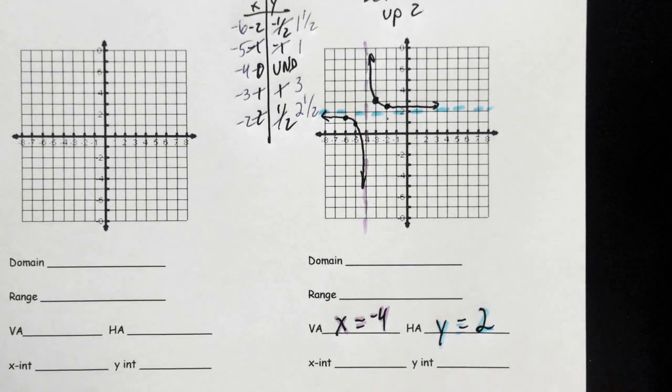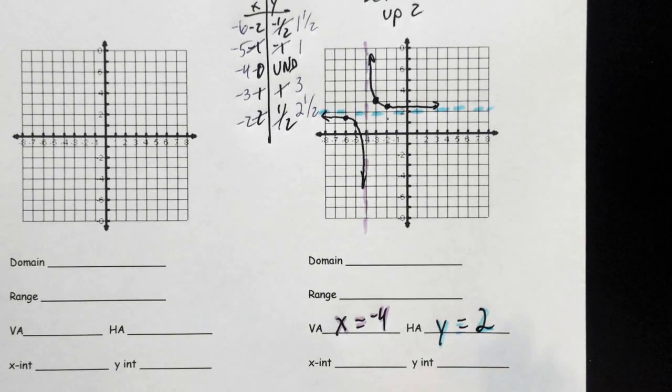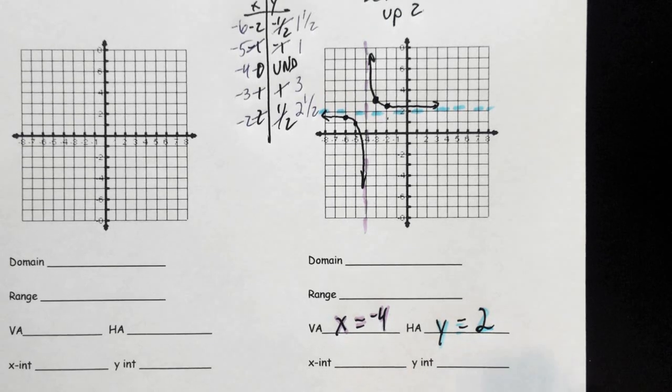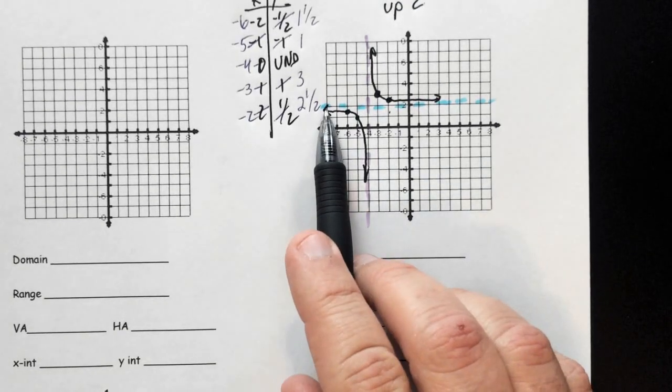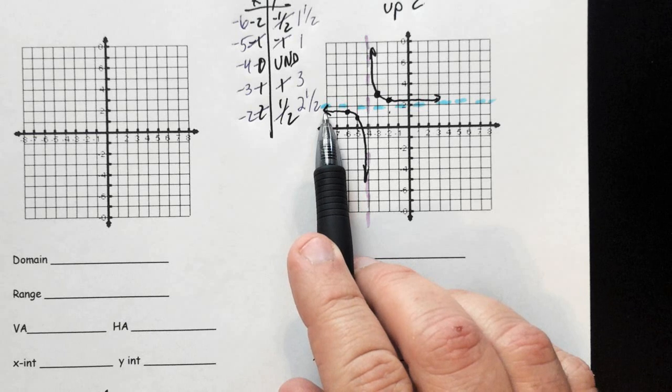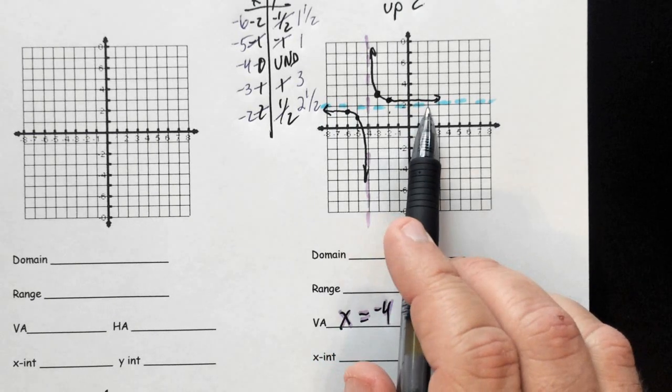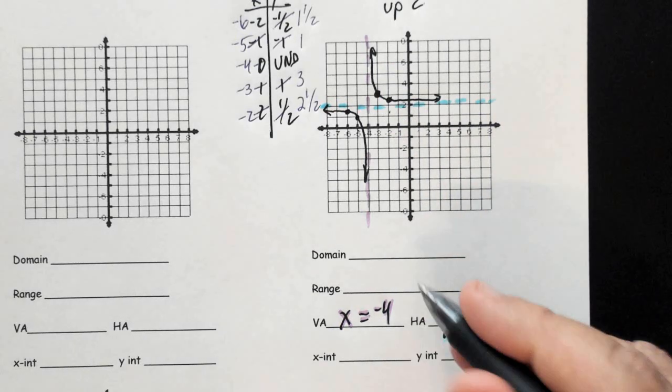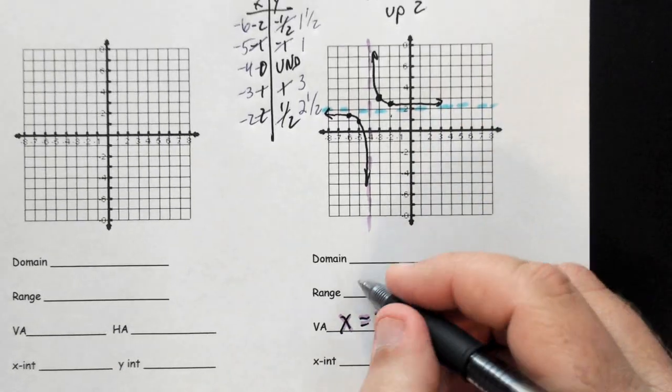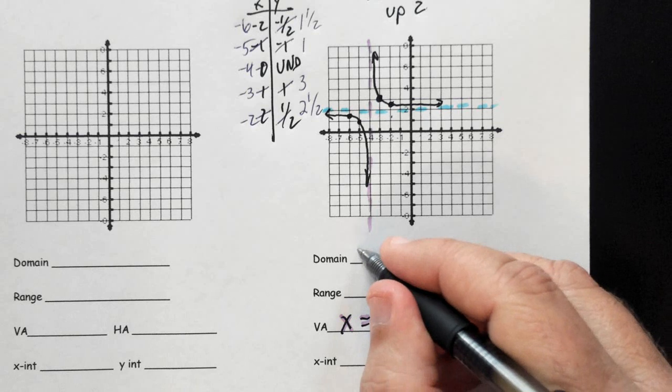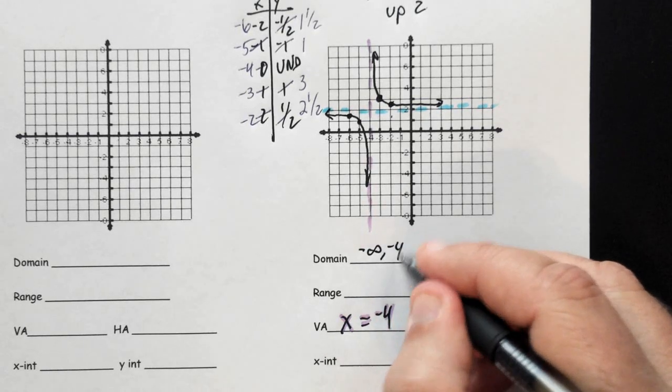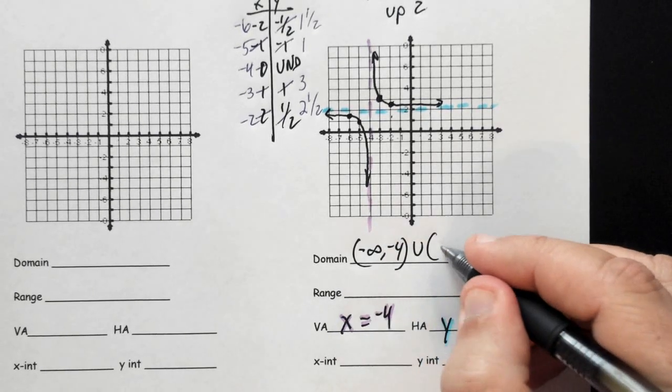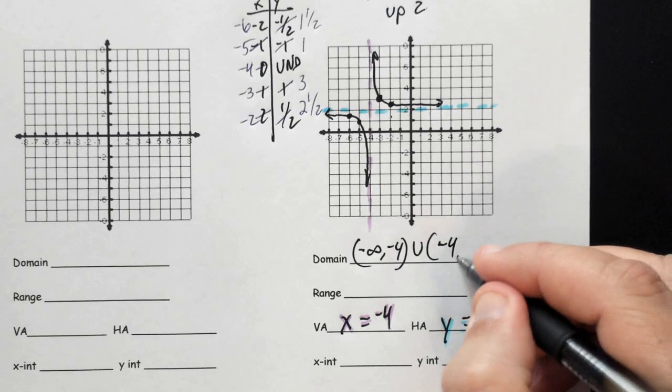Again, when we look at our domain and range now, our domain is going to apply with the vertical asymptote. In other words, it's negative infinity to the left and infinity to the right. But the one x value it's not allowed to be is negative four. That's kind of that restriction number. So it's going to be negative infinity to negative four, union, negative four to infinity.